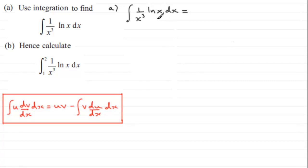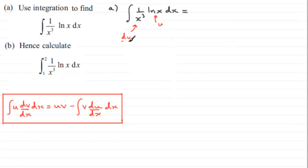When you get integration by parts questions that have a natural log of x in them, that's the part you call u. So we set u equal to the natural log of x, meaning that 1 over x cubed is the other part, which is dv/dx.